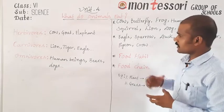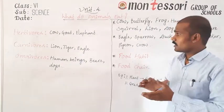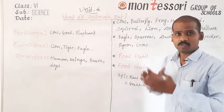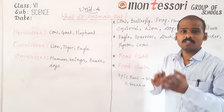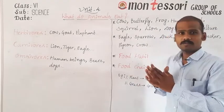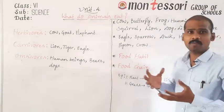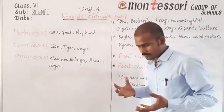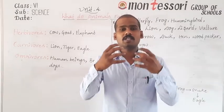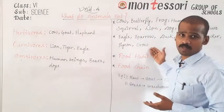By observing all these animals and birds, we understand that they eat different types of food and have different ways of taking in food. The type of food and the way in which an animal takes in food forms its food habit. Food habit is defined by the type of food and the way through which an animal or bird takes in food.